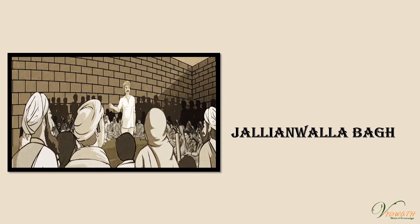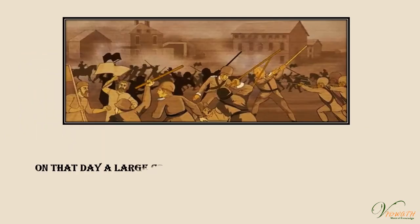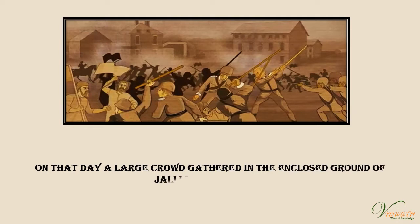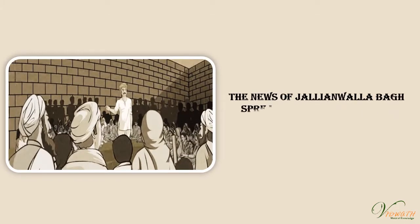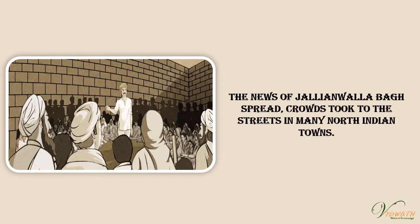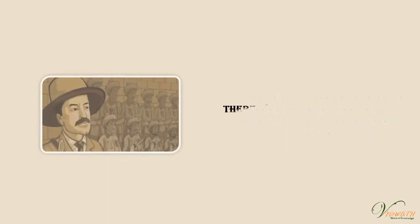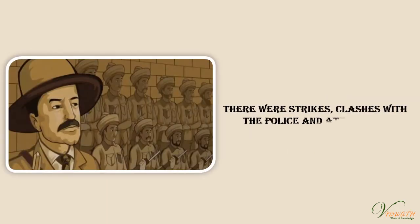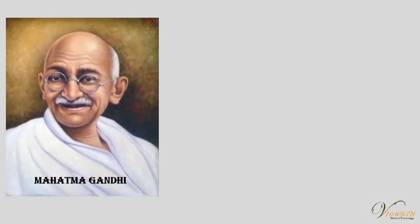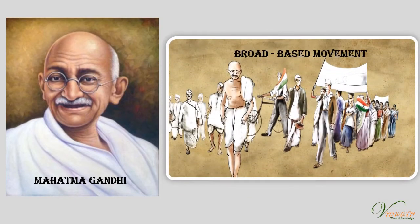On 13th April, the infamous Jallianwala Bagh incident took place. On that day, a large crowd gathered in the enclosed ground of Jallianwala Bagh. As news spread, crowds took to the streets in many North Indian towns. There were strikes, clashes with the police, and attacks on government buildings. Mahatma Gandhi now felt the need to launch a more broad-based movement in India.